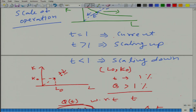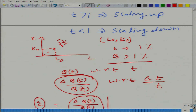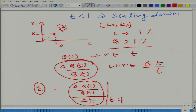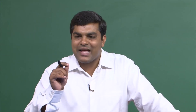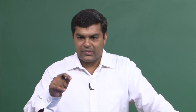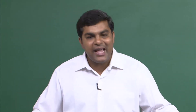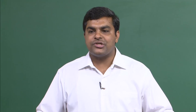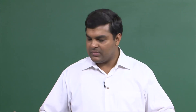Why t = 1? Because t = 1 represents the current level of operation. If we evaluated at t > 1 — say t = 2 — we would be measuring the rate of change at a point already away from the current operation, not locally. We are interested in the rate of change in quantity with respect to the rate of change in scale at the current point, which is why we evaluate at t = 1.